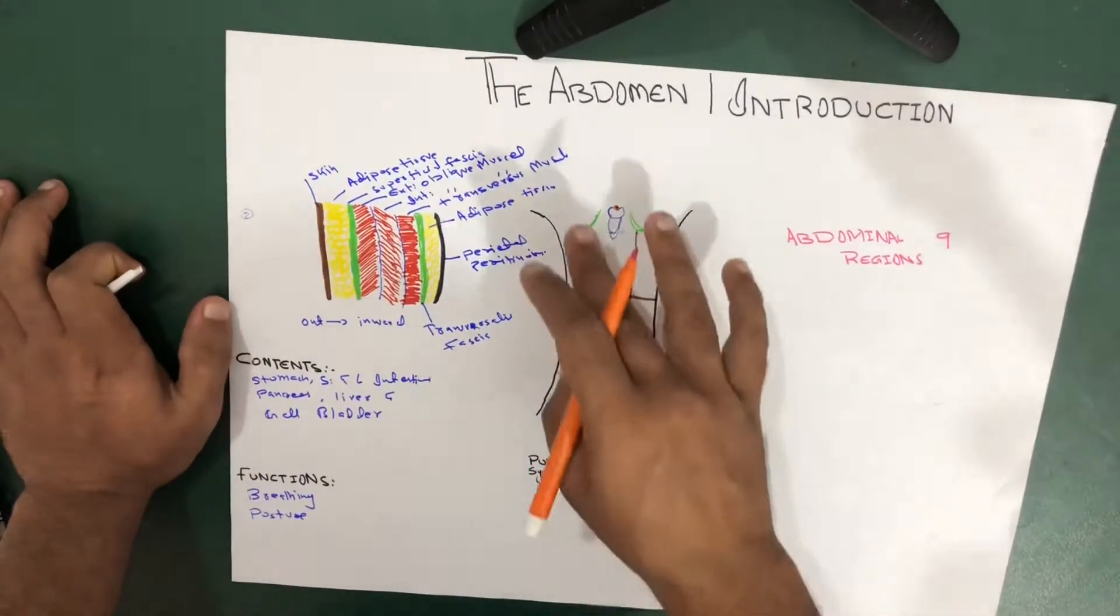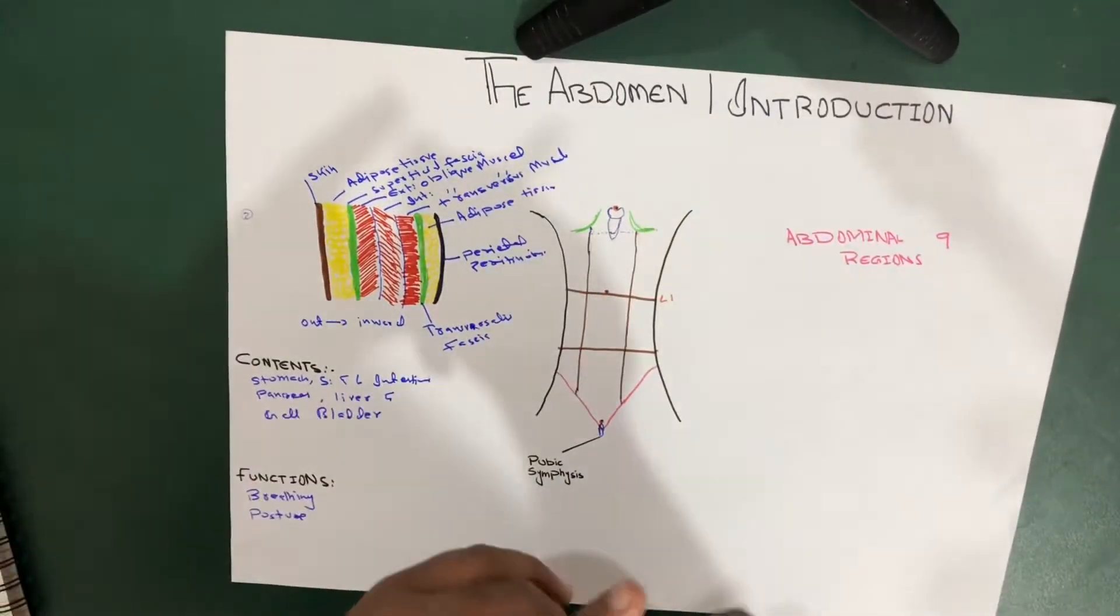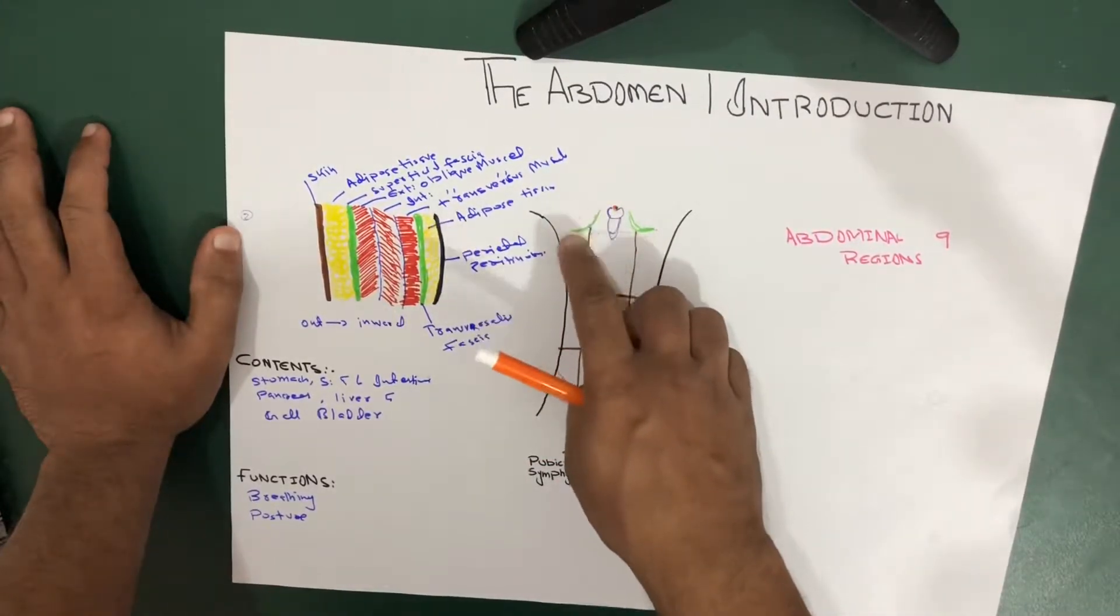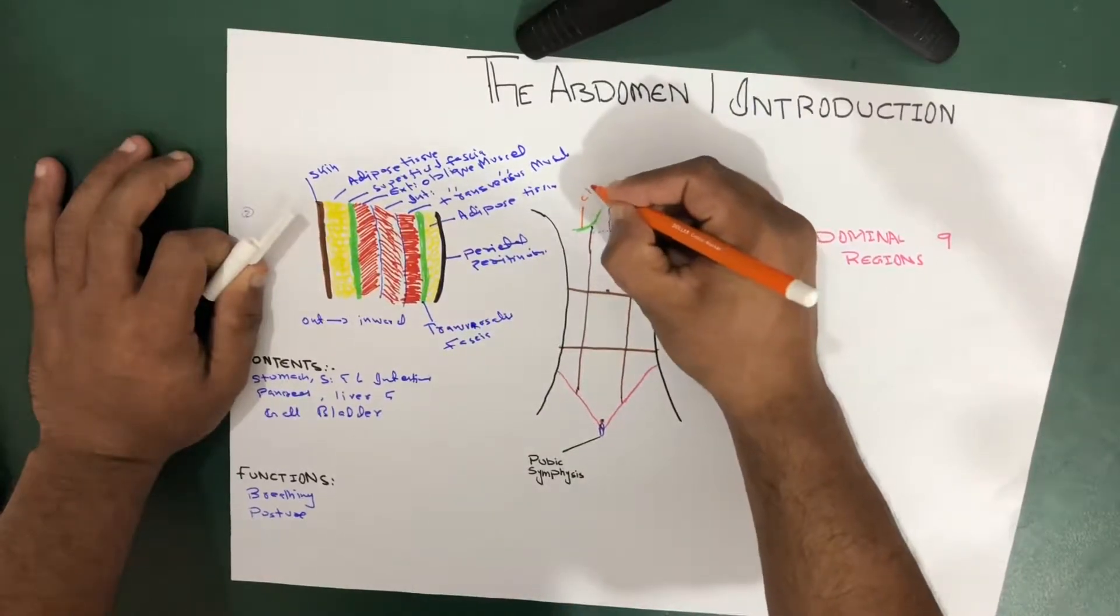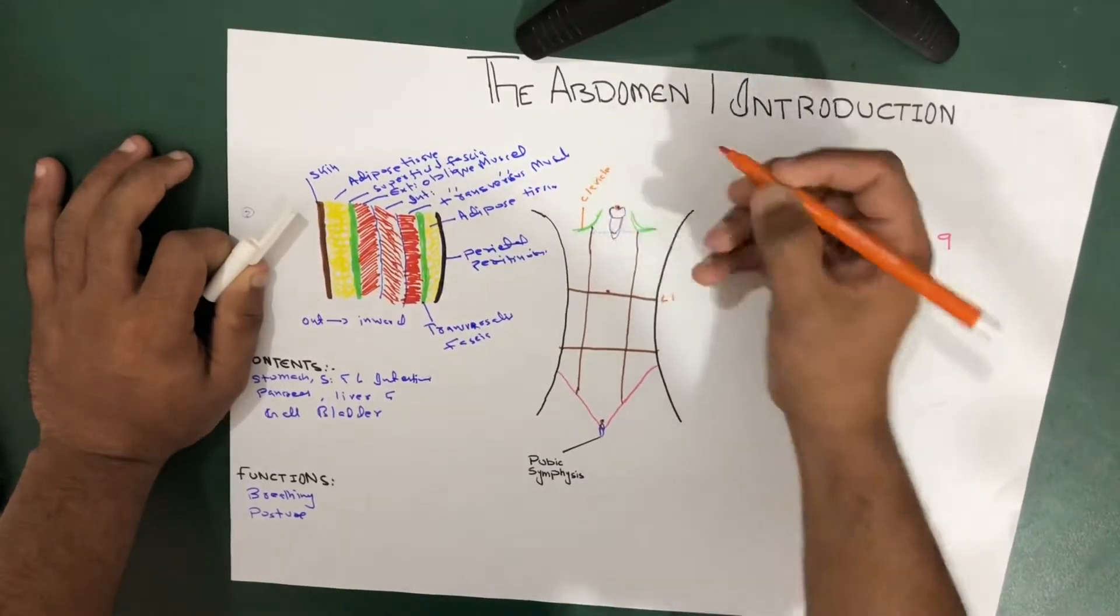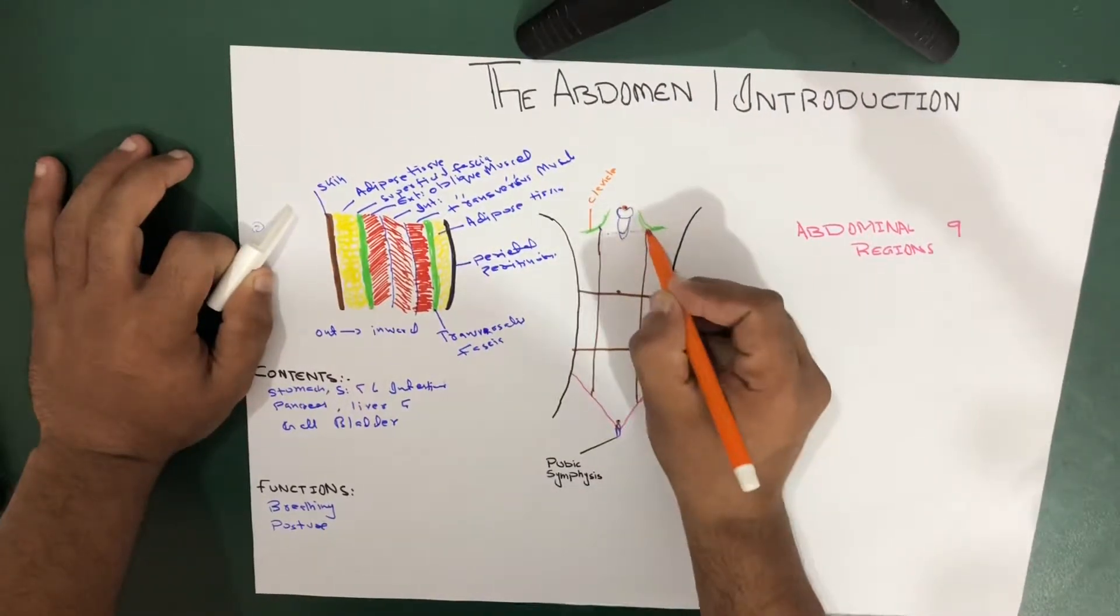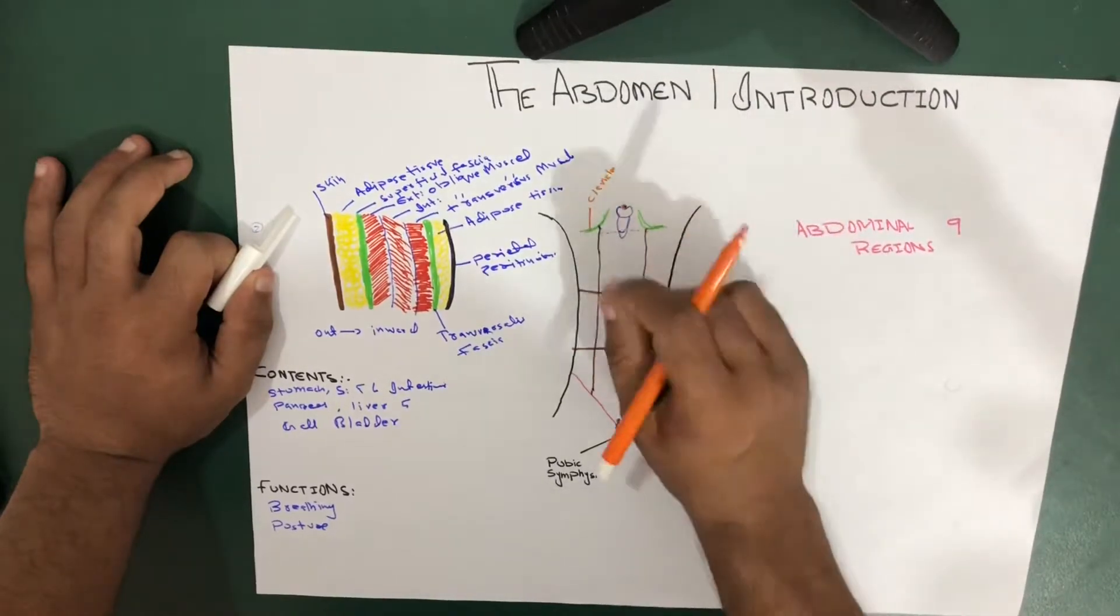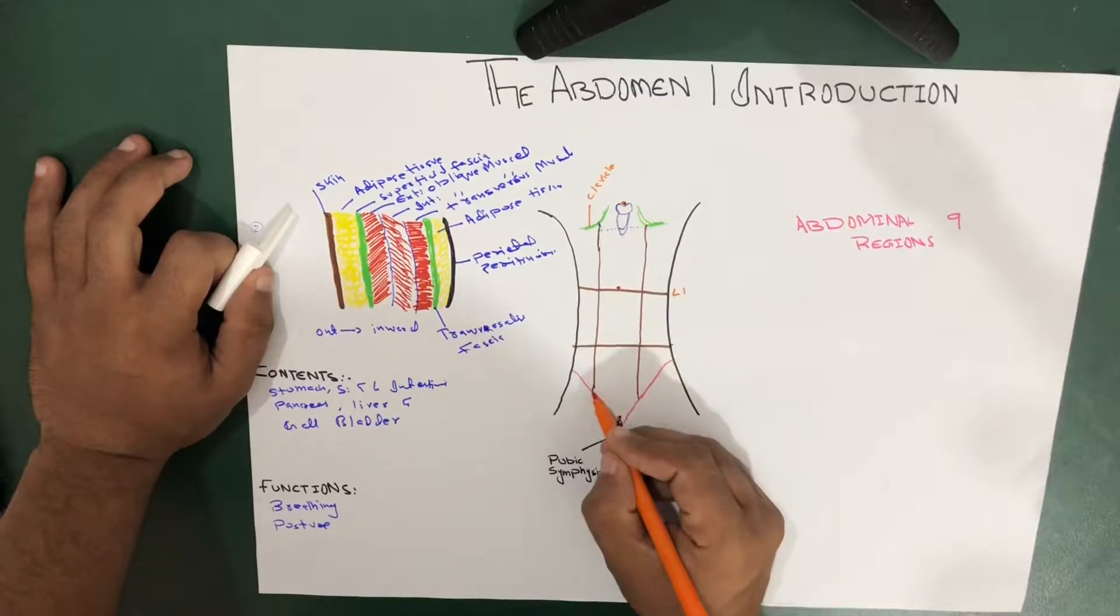Now let's talk about the two vertical lines. So vertical lines are very much easy. These are the clavicles, but a bit down. So from the mid of the clavicle of both, I'm talking about the one, so you understand it also applies on this one. So from the mid of the clavicle, we take a straight line, which goes to the mid of the inguinal ligament.